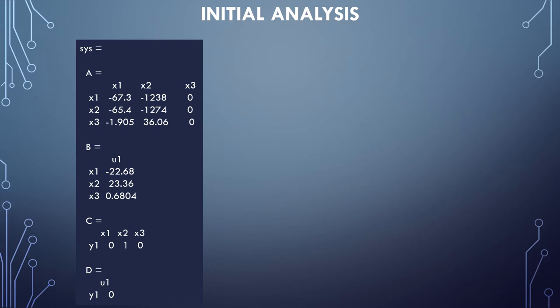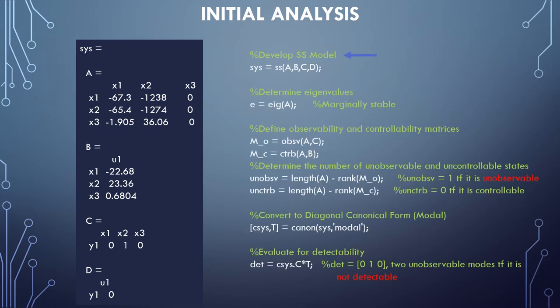Now, before we can begin to design a controller, we must first analyze the model for stability, observability, and controllability. In MATLAB, we first use the state-space function, seen here as SS, to create the state-space system. Then we can use the EIG function to calculate the eigenvalues of the system. If those values are all negative, then the system is stable. If one or more of the values are equal to zero, then the system is marginally stable. But if any of the eigenvalues are positive, then the system is considered unstable.